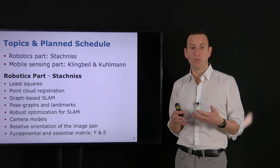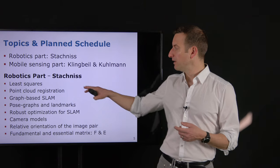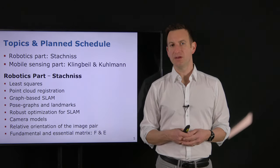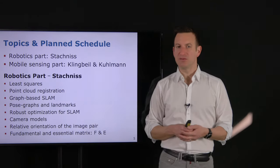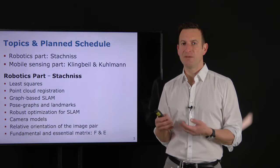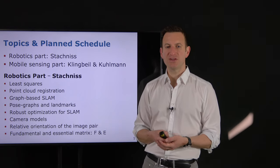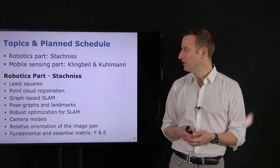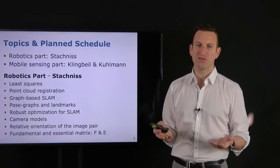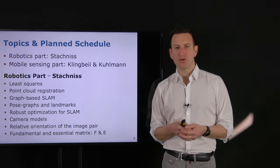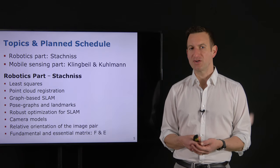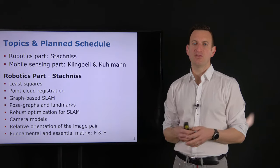Let's look deeper at what you'll learn. We start with a short introduction to the least squares approach, a core technique used in graph-based SLAM. Then we look into point cloud registration starting from known data association, generalizing to unknown data association — also known as the ICP (iterative closest point) algorithm — deriving it from the basics so you understand how point cloud registration actually works.